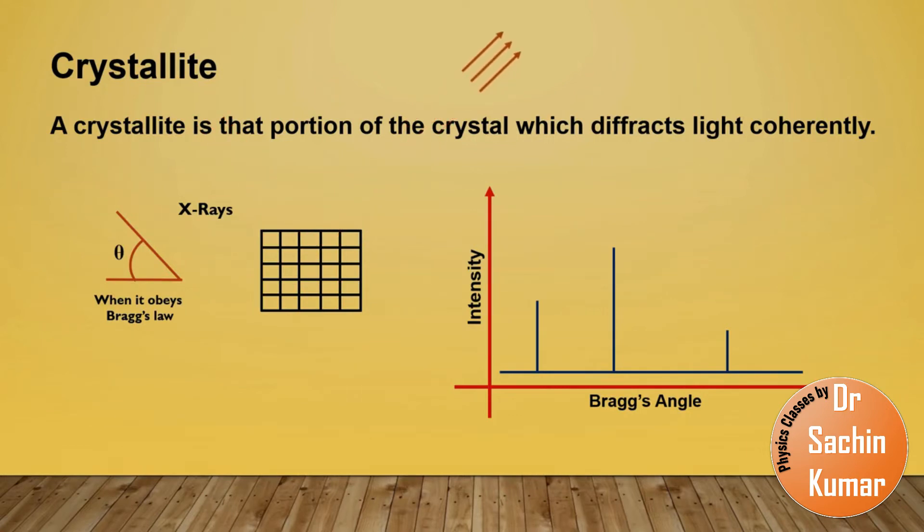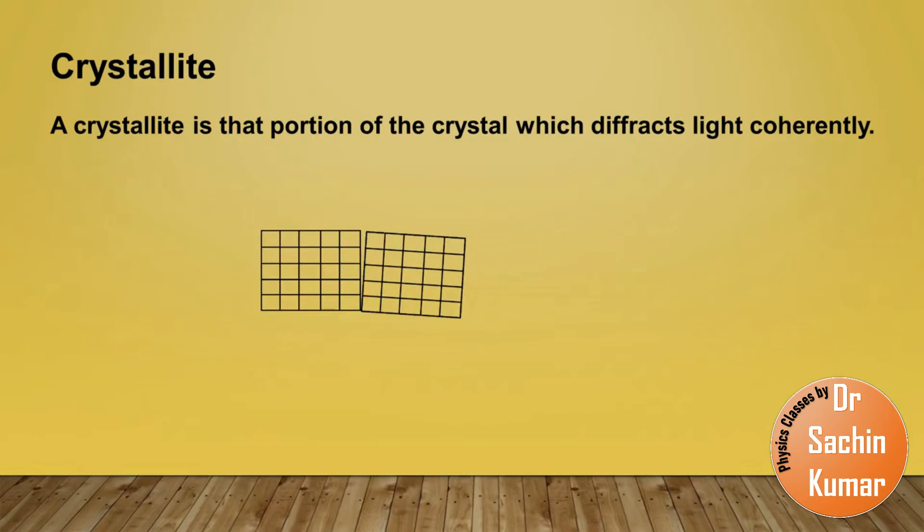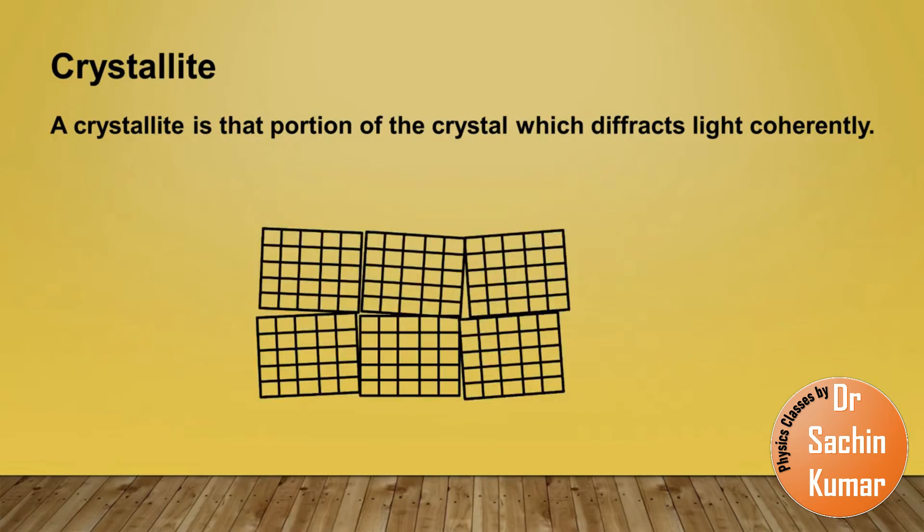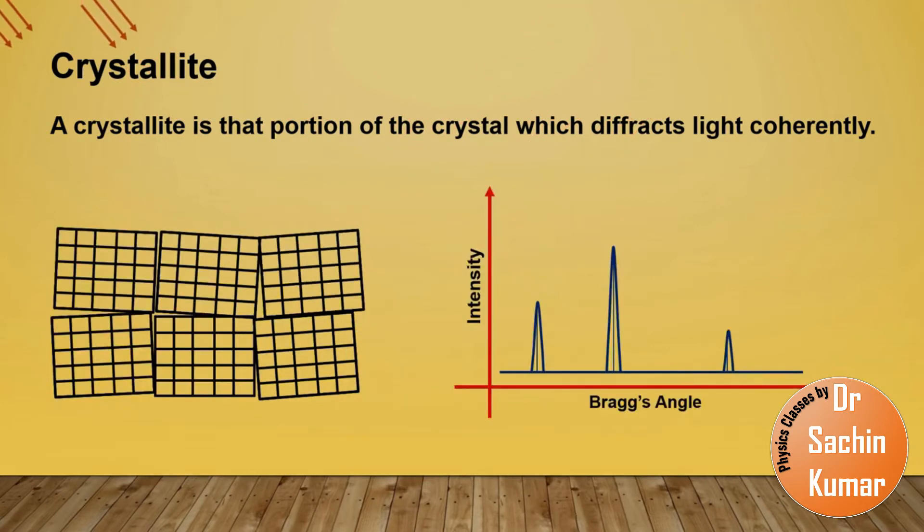But now let us consider there is not just one part of the crystal but there are two or many parts of the crystal. During crystal growth, because of point or line defects, the orientation of the crystal may change somewhat. Now when x-rays fall on these samples they will diffract light at slightly different angles. So if we make a plot of its XRD pattern, we will find that the x-rays are diffracting at slightly different angles, so we will observe a broad peak instead of a single line.